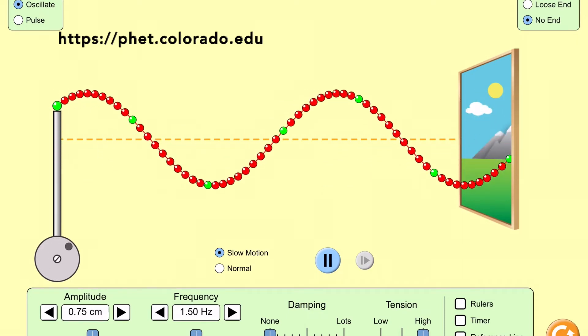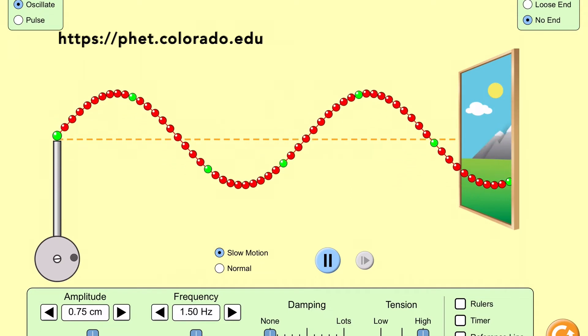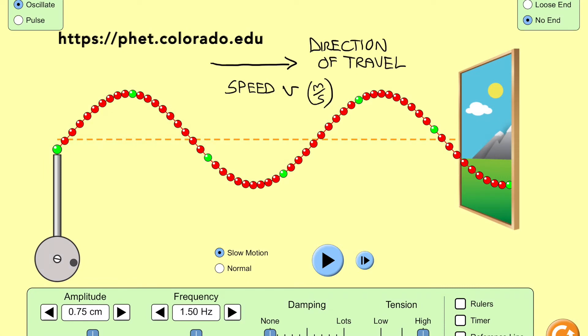As you can see here we have a transverse wave, which means the medium, in this case the string of beads, is moving up and down, but the wave is actually moving to the right and it's moving at speed v.